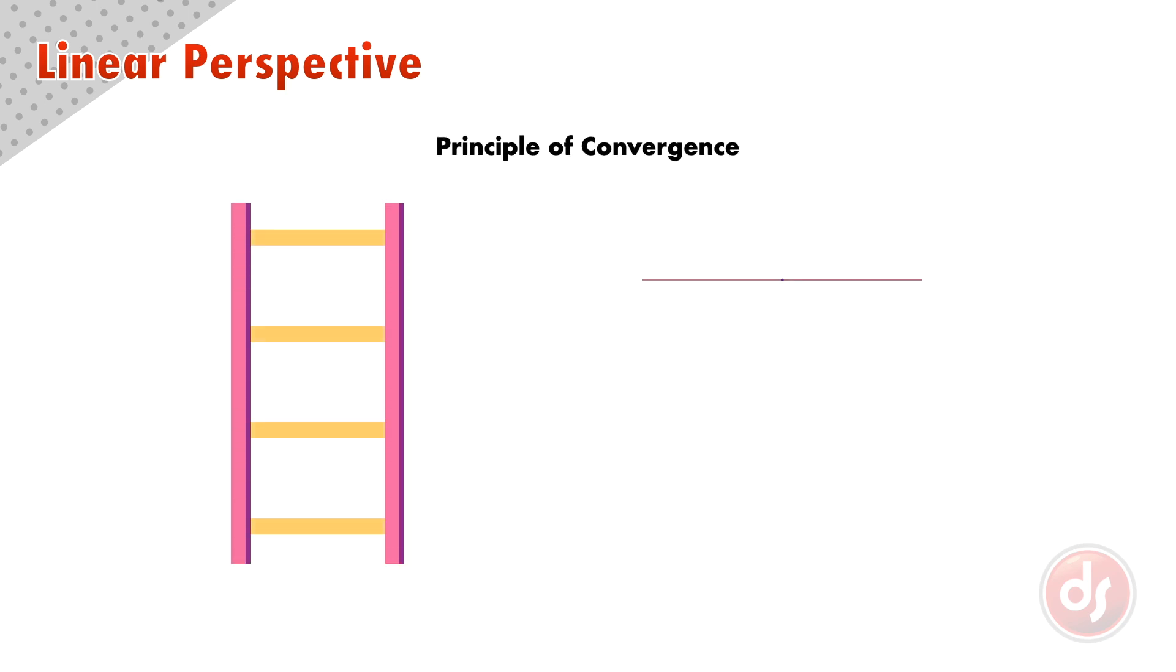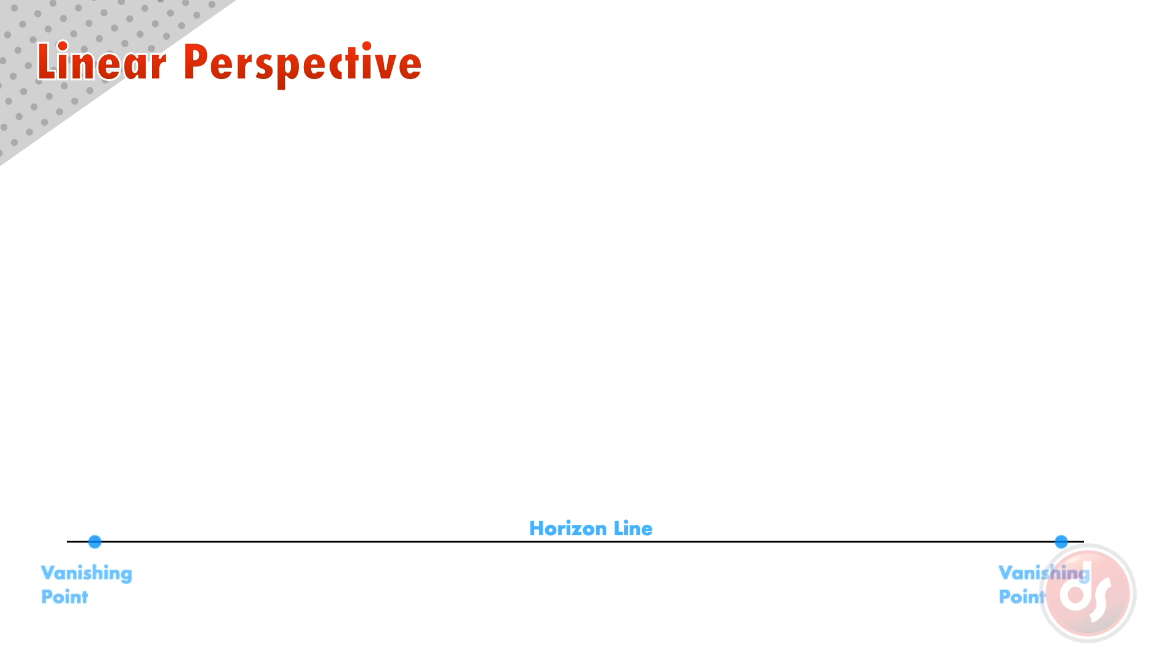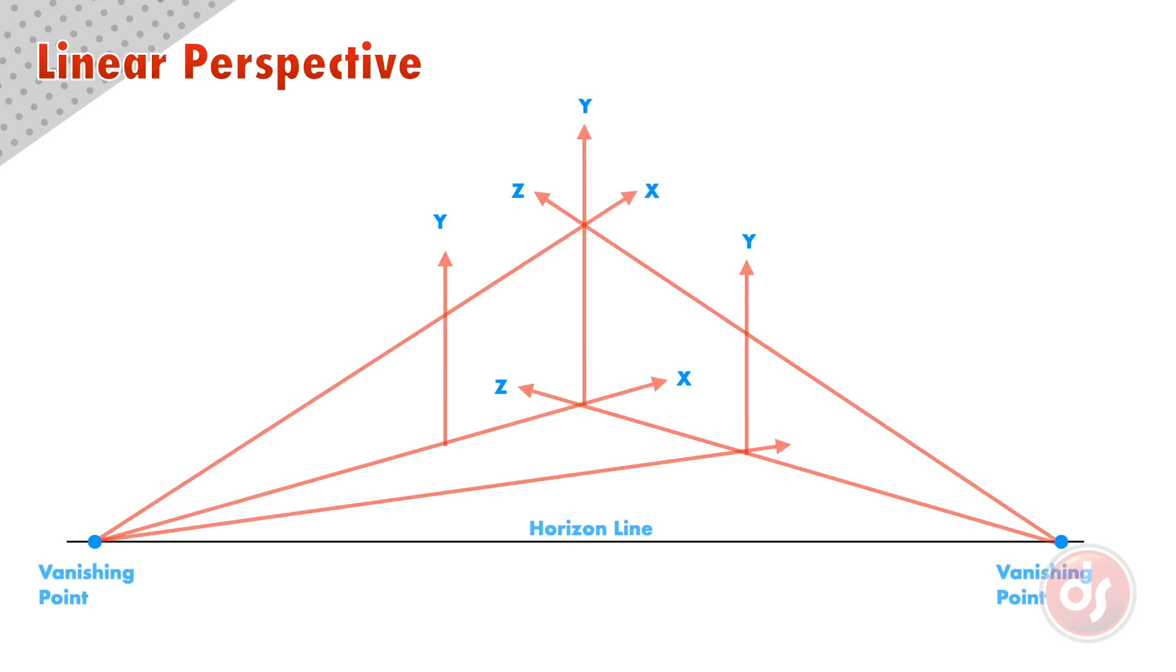Linear Perspective mimics how our eyes see, and it works off the principle of convergence, where parallel lines that move away from us appear to converge or meet at a point. We can also say this in reverse. As lines come toward us, they appear to diverge or get farther apart. If we apply this to a box in space, our line systems will go to vanishing points on the horizon line. This is what gives the illusion of real space.